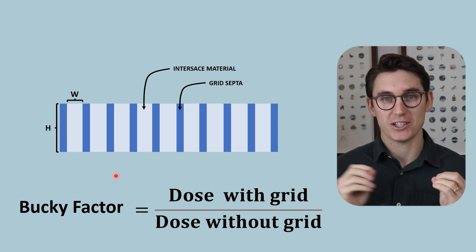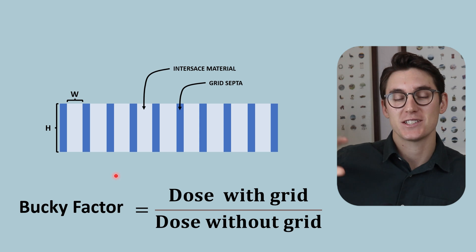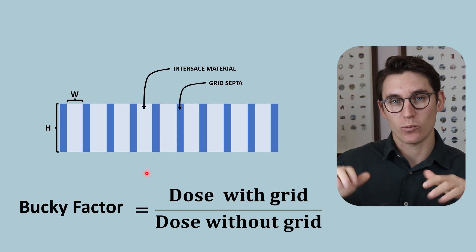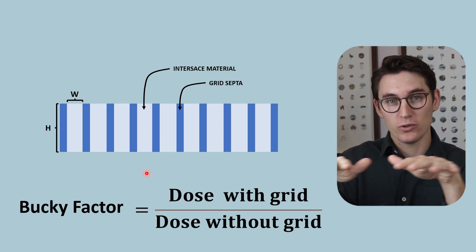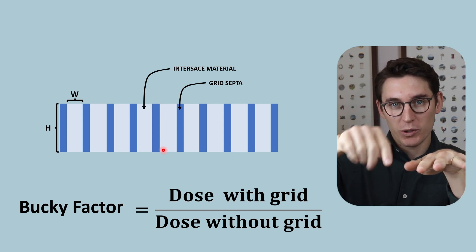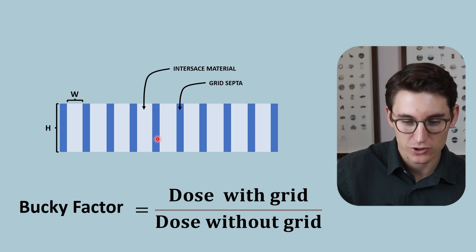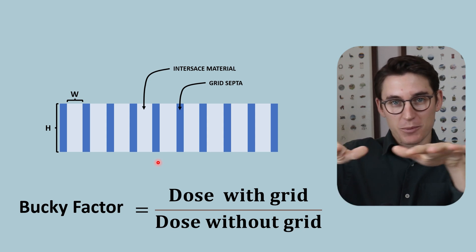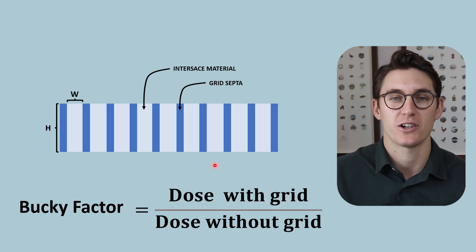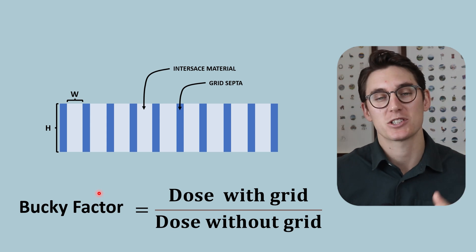You may come across the term Bucky grid — but the Bucky grid and Bucky factor are completely different. The Bucky factor is the increase in exposure needed to get the same detector exposure. A Bucky grid is a reciprocating grid — one that moves. A stationary grid would cast shadows from the septa onto the image, producing visible lines. The Bucky grid moves during exposure, preventing those lines from forming on our radiograph.